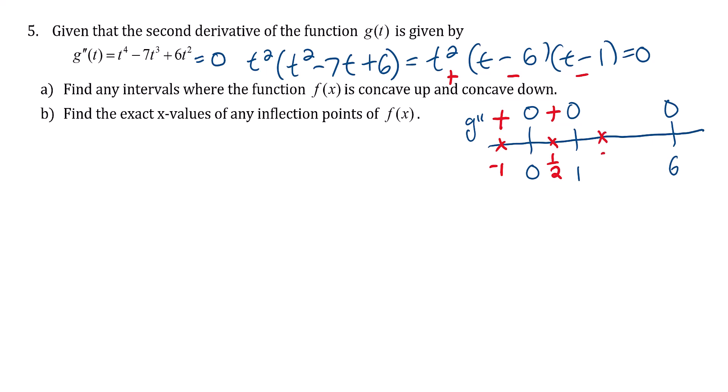Let's put in a 3. Our squared term is always positive. Putting a 3 in for t minus 6, that's negative. 3 for t minus 1, that's positive. Positive times negative is negative, times positive is still negative.